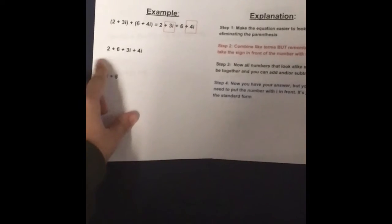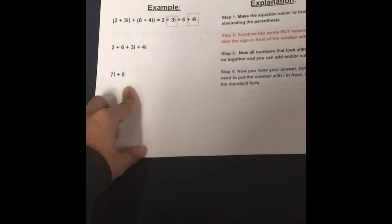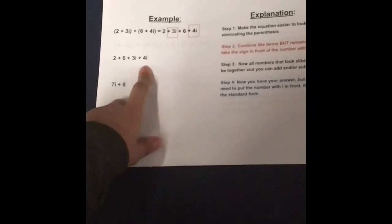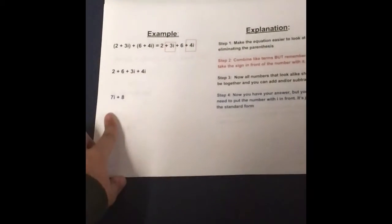Your like terms are 6 and 2. You add 6 and 2 and you get 8. Your second set of like terms is 3i and 4i. You add the two and you get 7i.